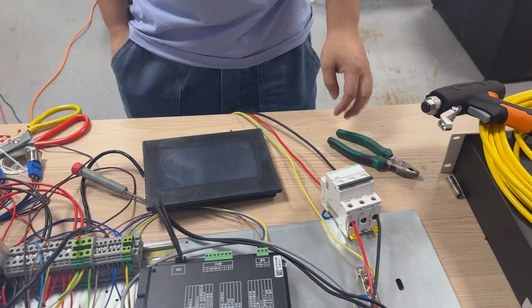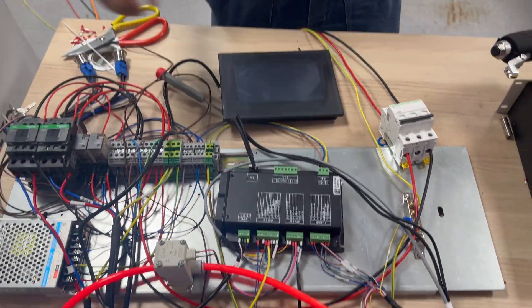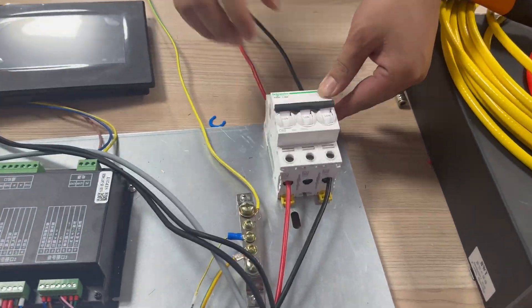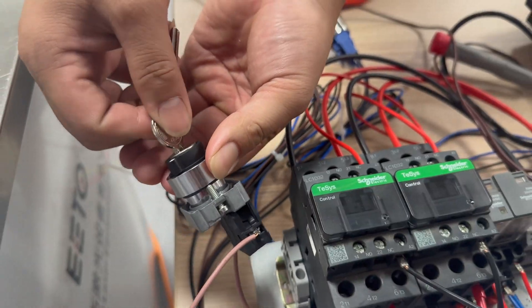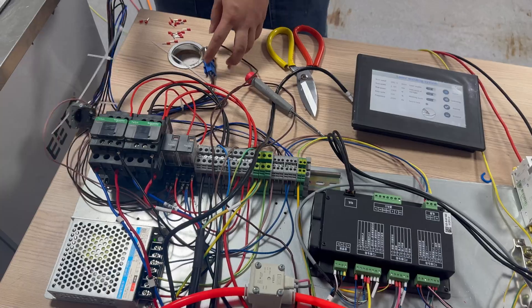Then we turn on the power of our equipment. This is our main power switch, turn it on. This switch screen will light up. Here are two buttons, this is laser.